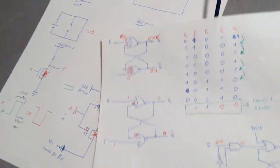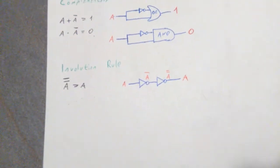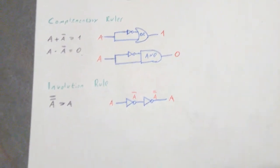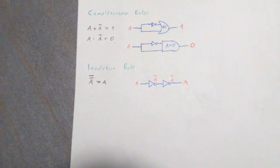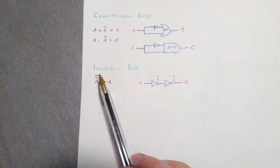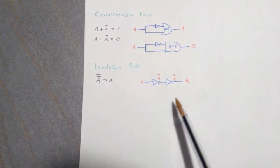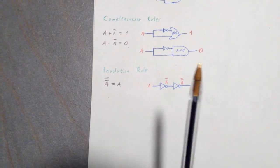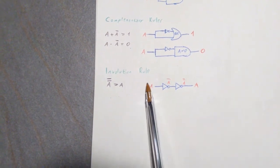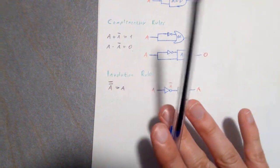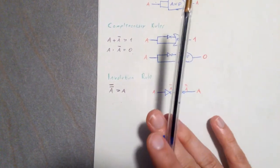As a quick reminder for what I've been talking about already, basically just remember that the involution rule means that as long as you have an even number of NOT gates, then the output is just gonna be like the input. It's just gonna be delayed.